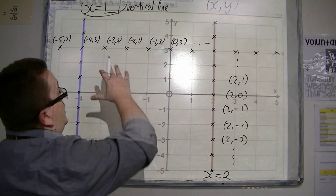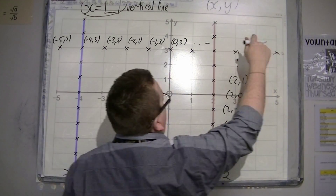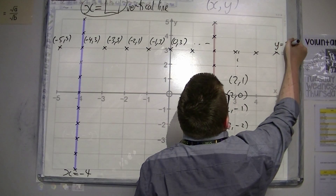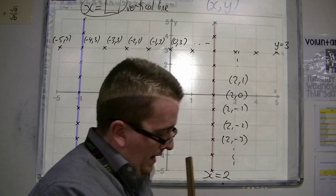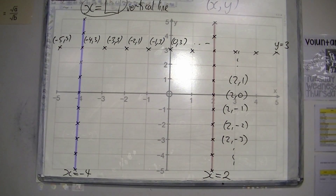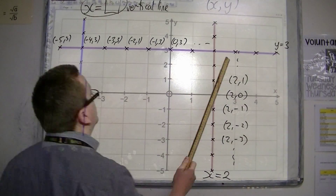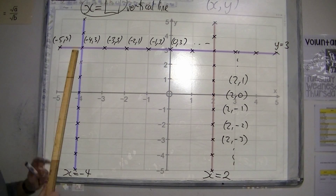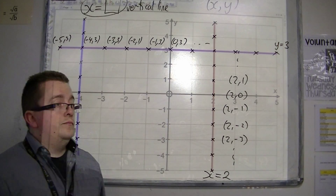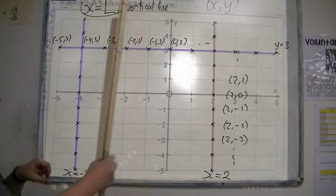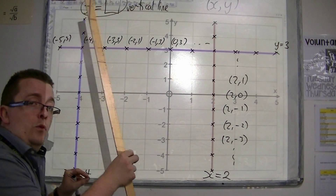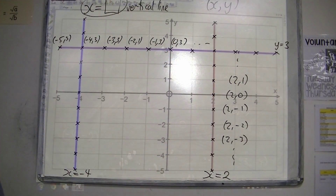So we can say that line must be y equals 3. Let's see that on our graph — y equals 3 — coming up in purple. So y equals 3 is this line, and it has all coordinates along it with y coordinate being 3.